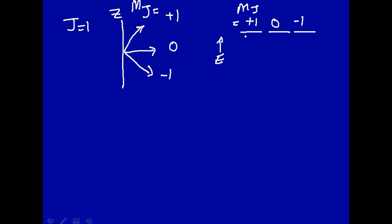What we will find in the presence of a magnetic field is that these energy levels are no longer degenerate. They have different energies. So why would that be?